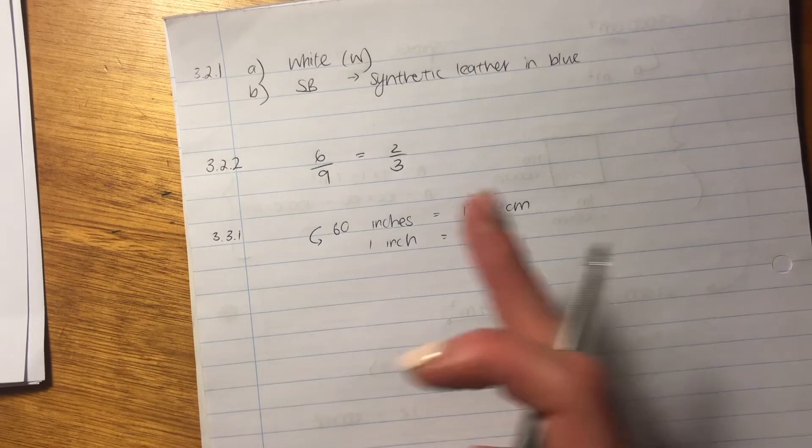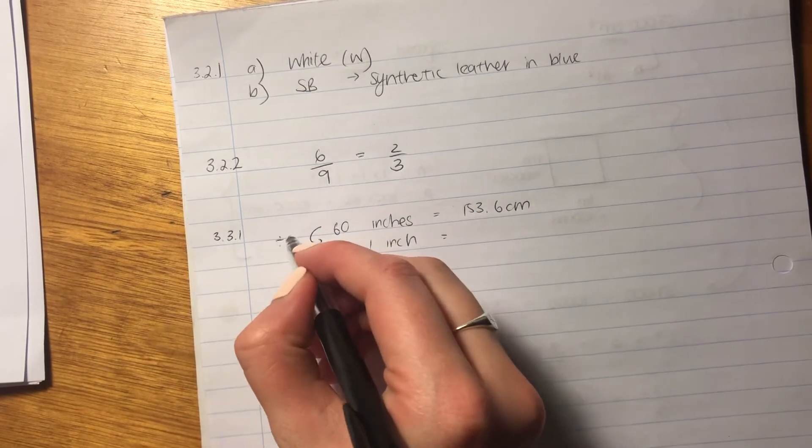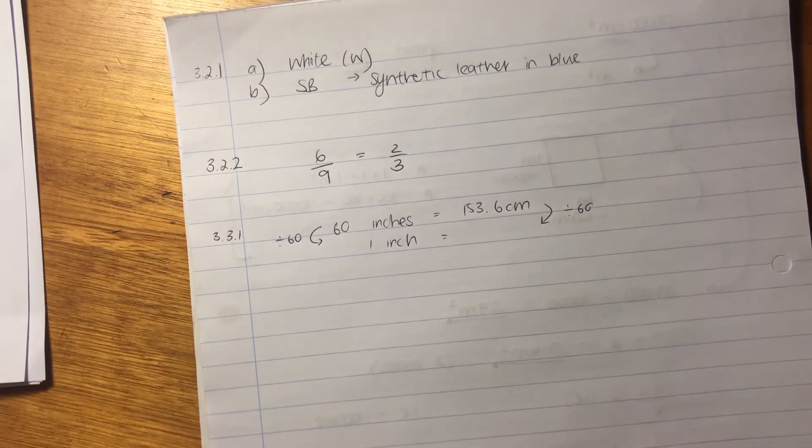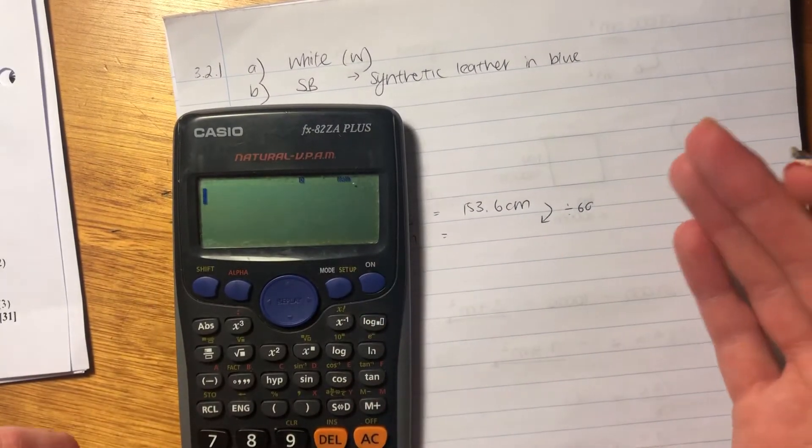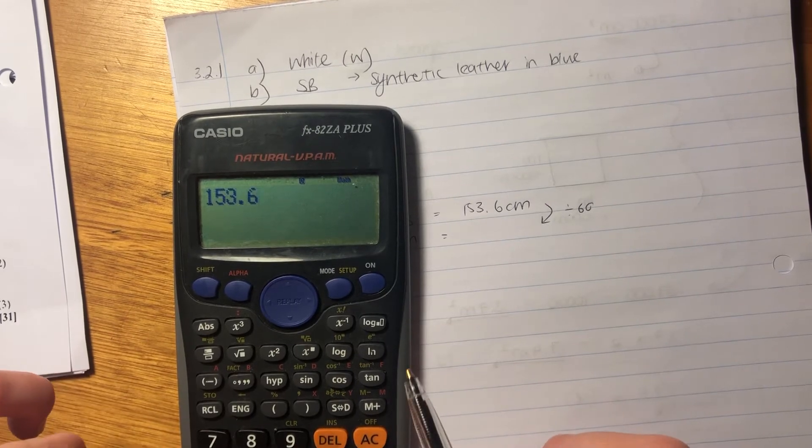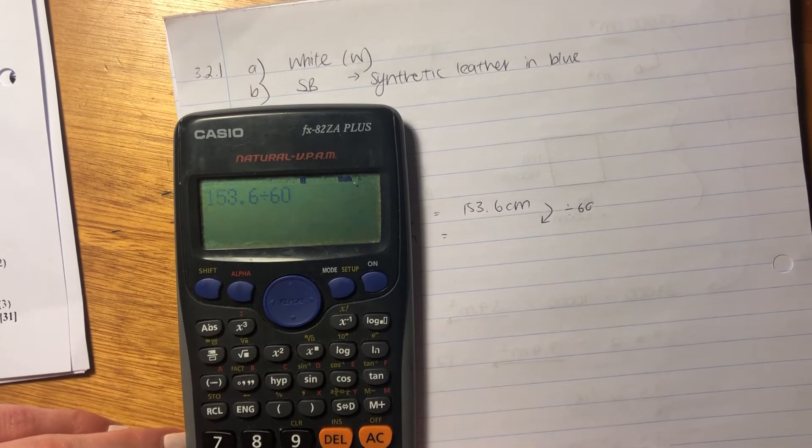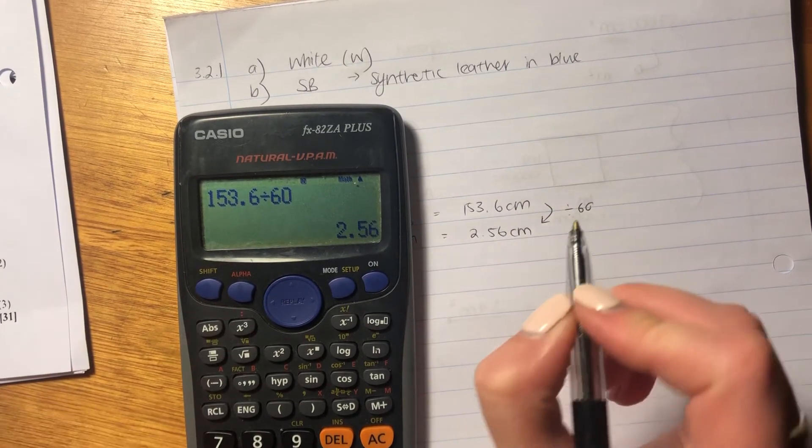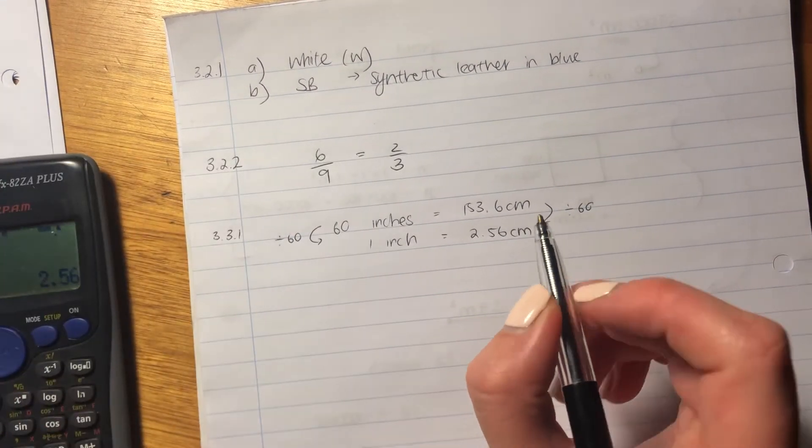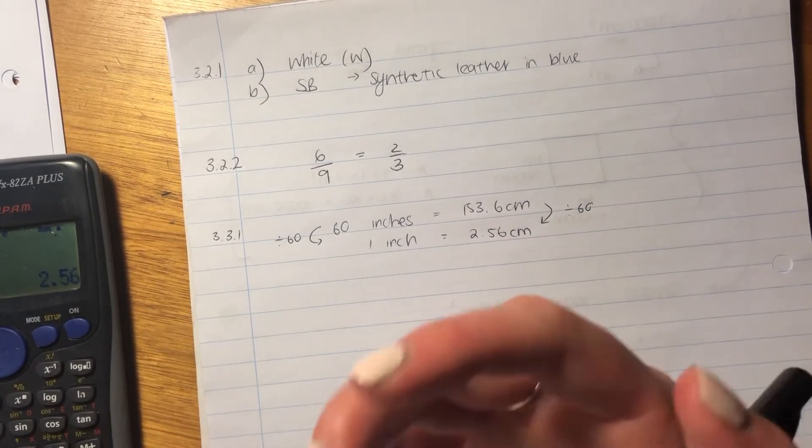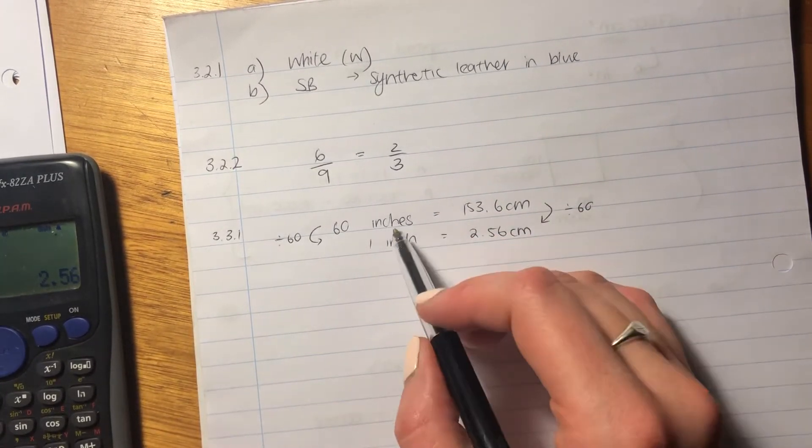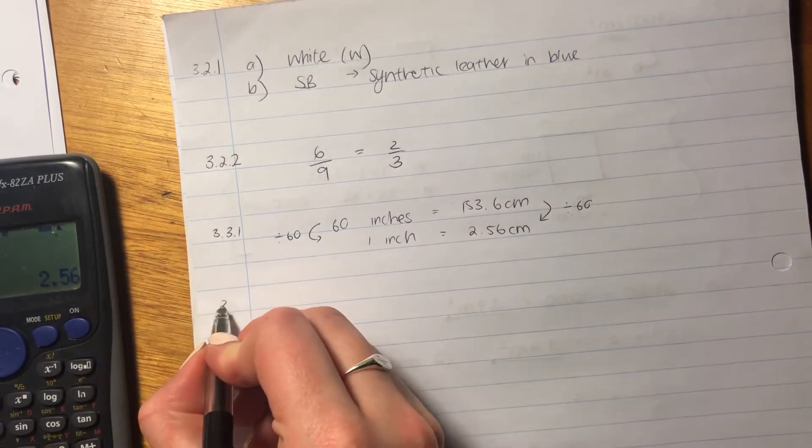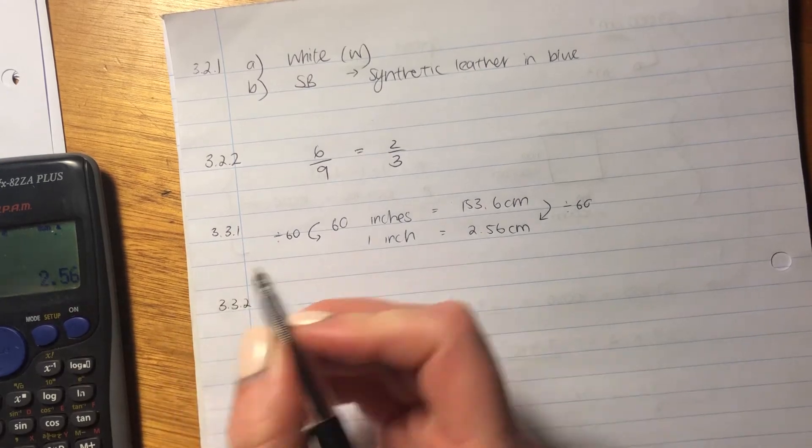So what did we do to this side to get from 60 to 1? We divided that side by 60. What we do to the one side, we have to do to the other. So to get the equivalent in centimeters, you divide it by 60. So 1 inch is 2.56 centimeters. So it's very important that you see this as a ratio. It's similar to like an exchange rate. It's just showing different measurements and how they're related to each other.